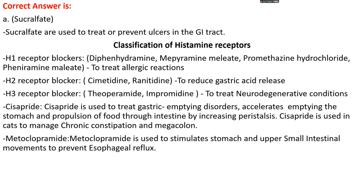Cisapride is used to treat gastric emptying disorders — it accelerates emptying of the stomach and propulsion of food through the intestine by increasing peristalsis. Cisapride is used in cats to manage chronic constipation and megacolon conditions. Metoclopramide is used to stimulate stomach and upper small intestine movement to prevent esophageal reflux.